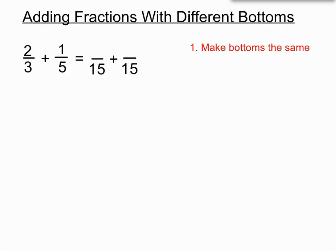Now what have we done to that 3 to make 15? We have multiplied by 5. So the rule is we've got to do the same to the top. So when we multiply the top by 5, I think you can see that we might get 10 on the top there. That's true.